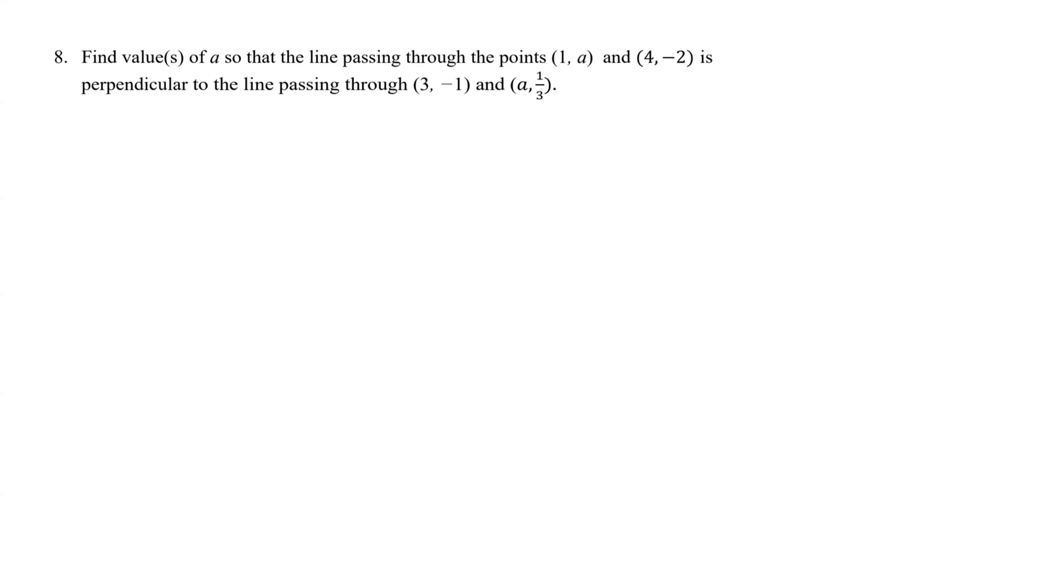is perpendicular to the line passing through the points (3, -1) and (a, 1/3). Recall that two lines are perpendicular if their slopes are negative reciprocals of each other.